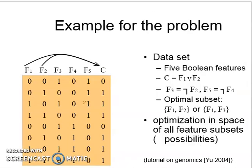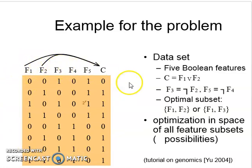For example, suppose a dataset is given with attributes U1, U2, U3, U4, U5. Each dataset has different types of features: F1, F2, F3, F4. We find the sum of feature C from F1 and F2. We also take the optimal subset from combinations such as F1 and F2, or F1 and F3. This represents optimization in the space of all feature subset possibilities.